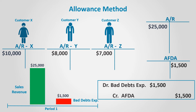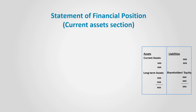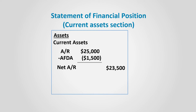By this method, accounts receivable will appear on the balance sheet with their total value, and the AFDA will be deducted to get the net accounts receivable. On the statement of financial position, or the balance sheet, under the current assets side, you will find accounts receivable with a total of $25,000. Then the AFDA is subtracted to get a net accounts receivable of $23,500. The accounts receivable control account and individual accounts in the subsidiary ledger are untouched, while the AFDA is used to reduce the total accounts receivable without reducing any specific account.